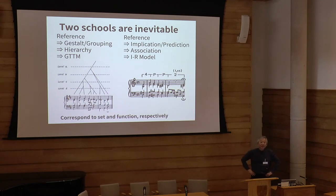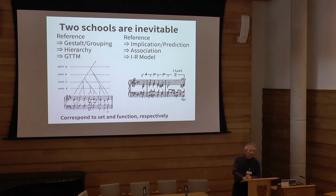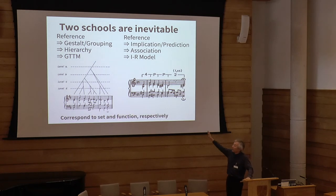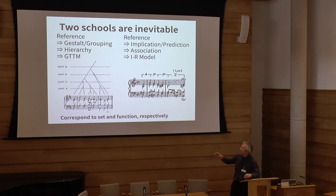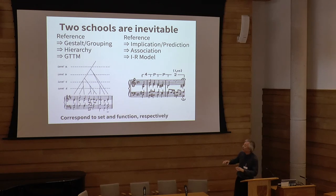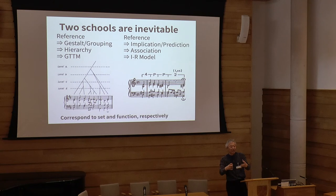So the two schools are inevitable. We can study the recognition of novel references from a semiotics point of view to get gestalt or group cognition, which follows a hierarchy, and the GTTM theory treats such intuition or cognition. On the other hand, similarly starting with reference, Narmour's intuition treats the implication-prediction perspective of references, defining many kinds of association between individual notes on the score, and proposing the Implication-Realization model.